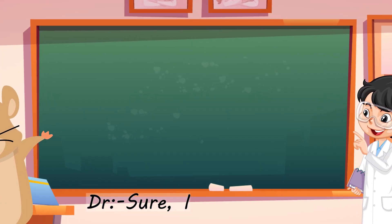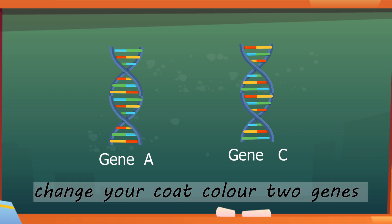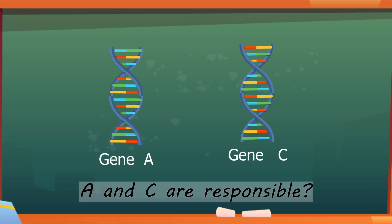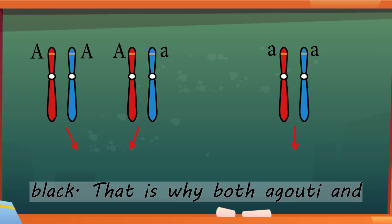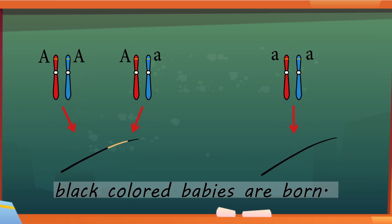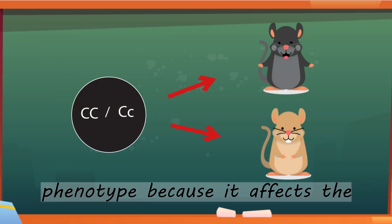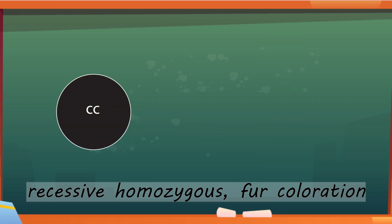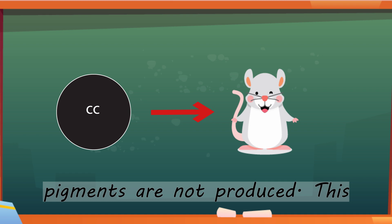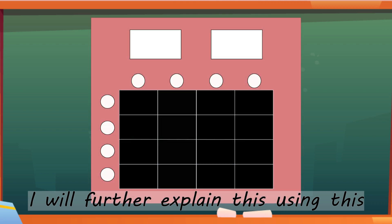Sure. I will explain. Mr. Alvin, do you know that to change your coat color, two genes A and C are responsible? The wild type color agouti is dominant to the solid color for black. That is why both agouti and black colored babies are born. However, the gene C also affects the phenotype because it affects the pigment production. If the gene is recessive homozygous, fur coloration pigments are not produced. This results in the birth of white baby mice.